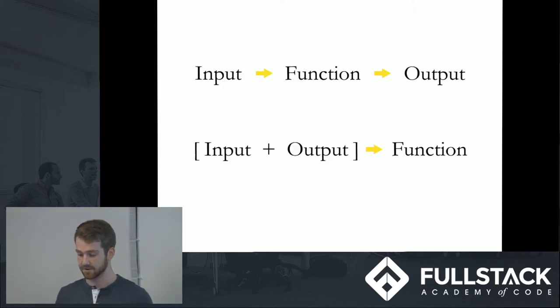So typically, as programmers, we think in the way of we have an input, we have a desired output. How do we write a function that gets us from A to B? And that's all fine and good. But for machine learning, it works the opposite. We want to give a machine a lot of input and output, a lot of x and y values so that they can generate that function from it or an algorithm.